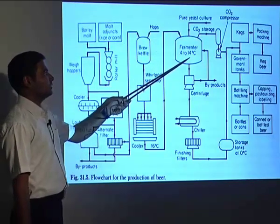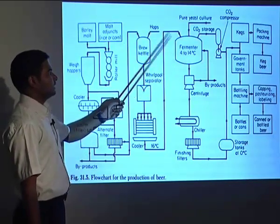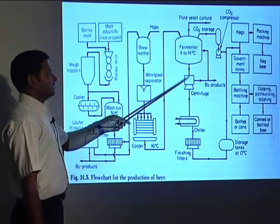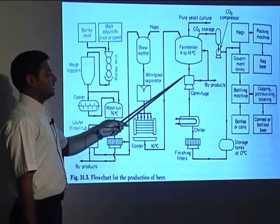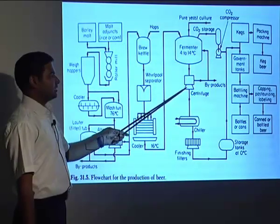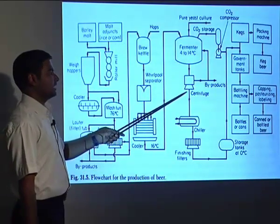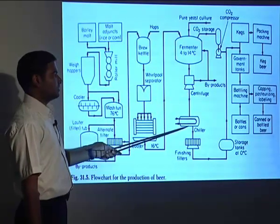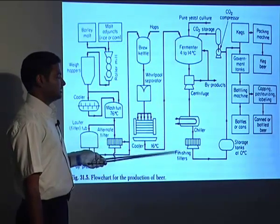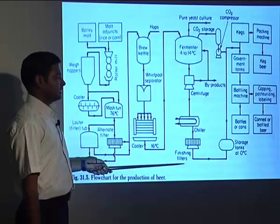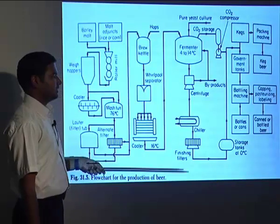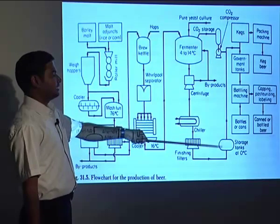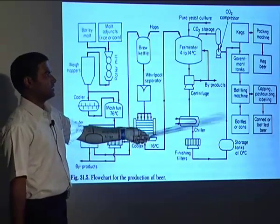The mixture is cooled by air flow from 76°C down to 60°C and then taken into the fermentation tank. The temperature is maintained at around 4 to 14°C. Yeast culture is added and fermentation proceeds. After centrifugation, the remaining waste material is removed and the beer formed comes out. The beer is then chilled, passed through a finishing filter, and stored at 0°C, which arrests further fermentation.